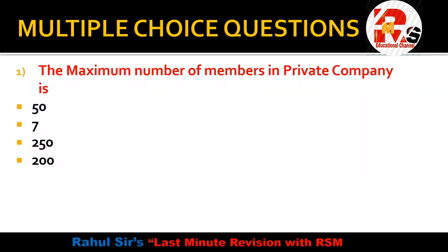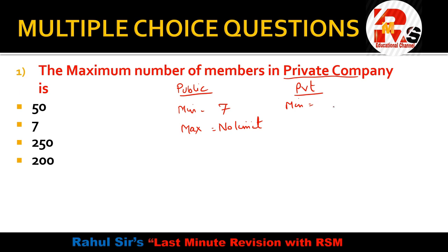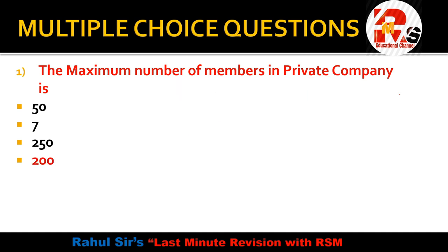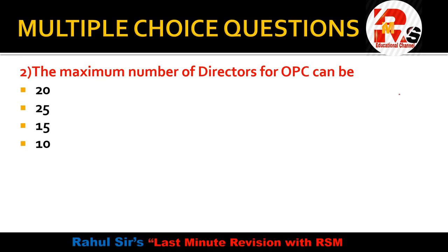Question number 1: What is the maximum number of members in a private company? For a public company, the minimum members are 7 and there is no maximum limit. For a private company, the minimum is 2 members. The maximum is 200 members — this is the new limit as per the Companies Act 2013. So the right answer for question number 1 is 200.